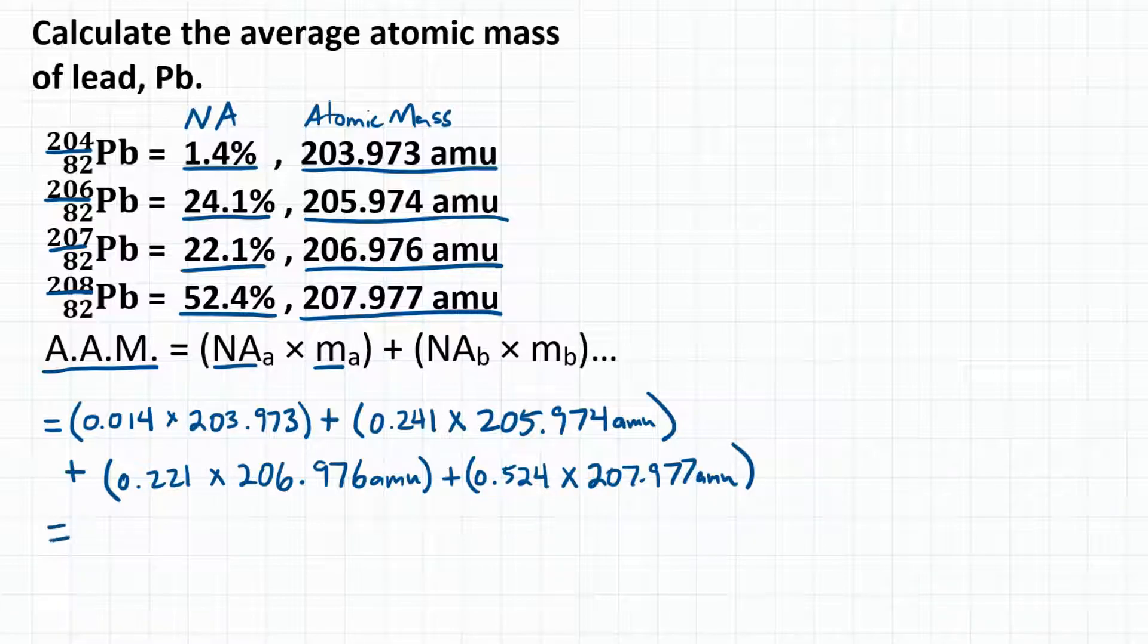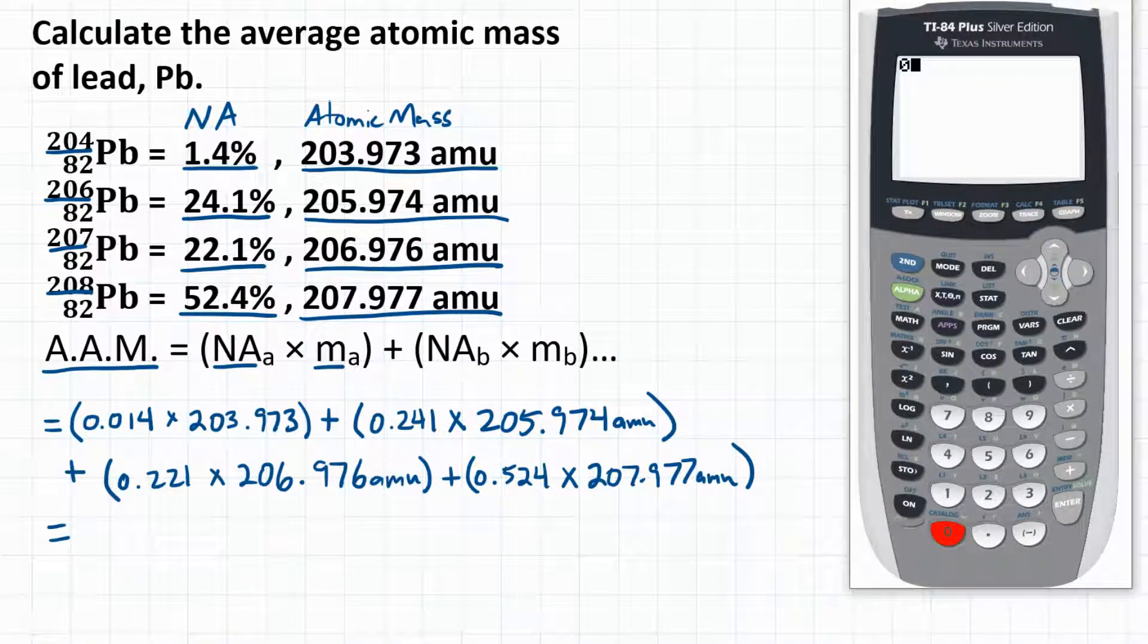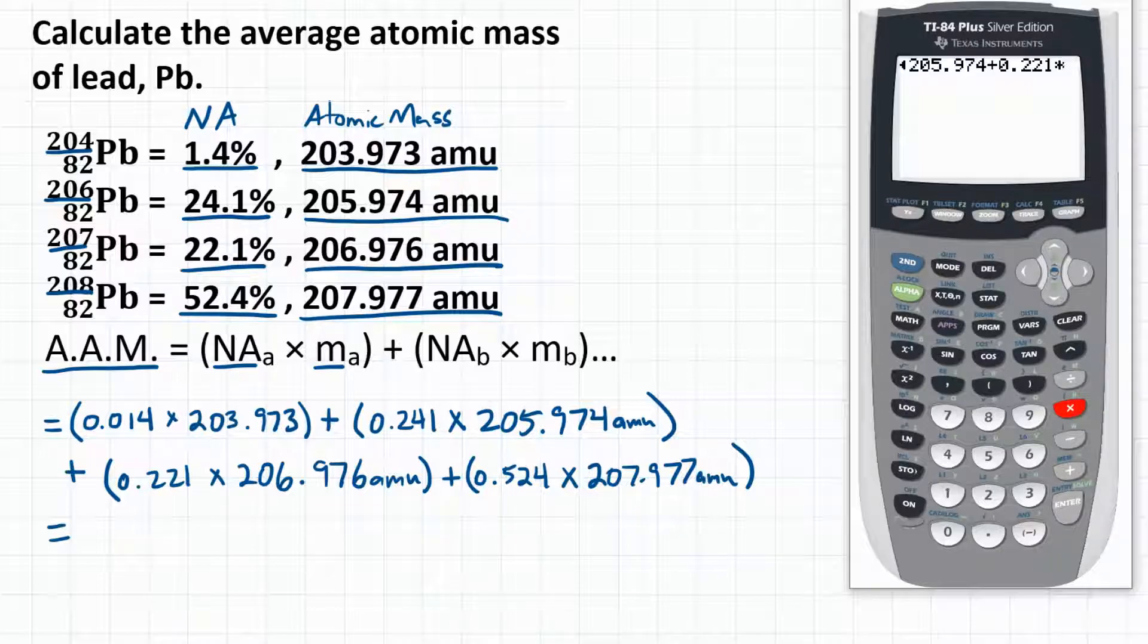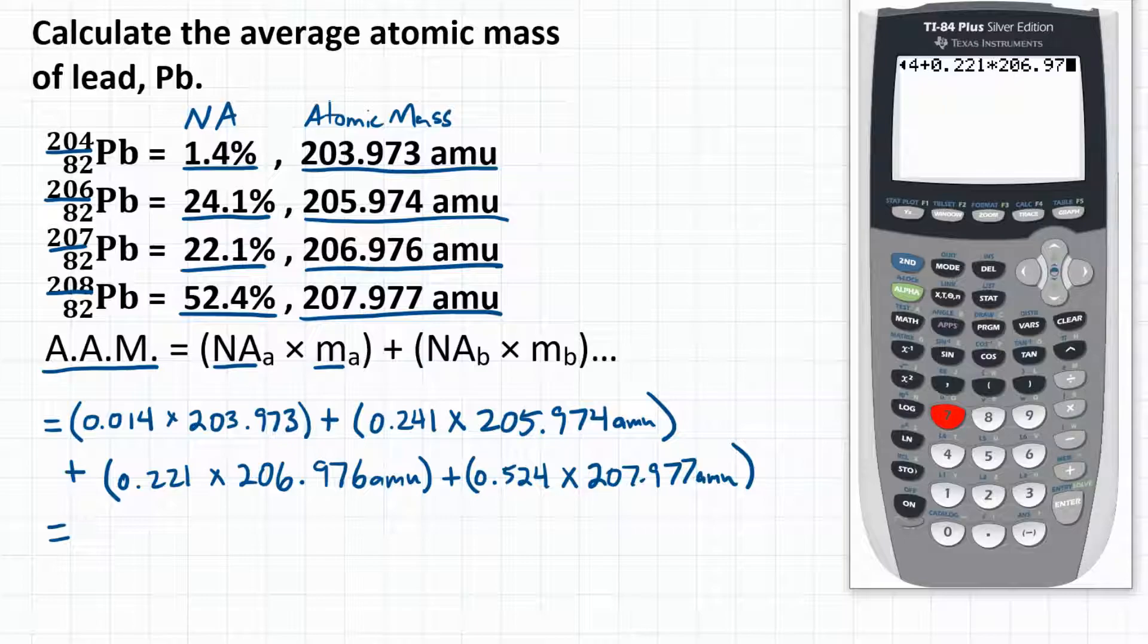We now need to plug this into our calculator. 0.014 times 203.973 - that was for our first isotope. Moving on to the second, we will add 0.241 times 205.974, add 0.221 times 206.976, and then finally,